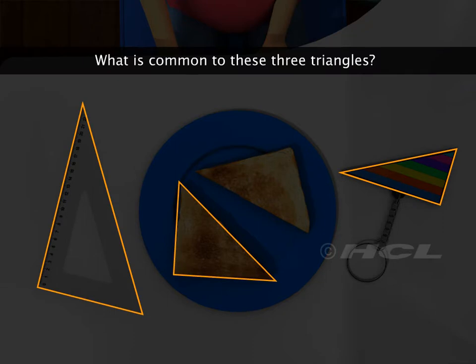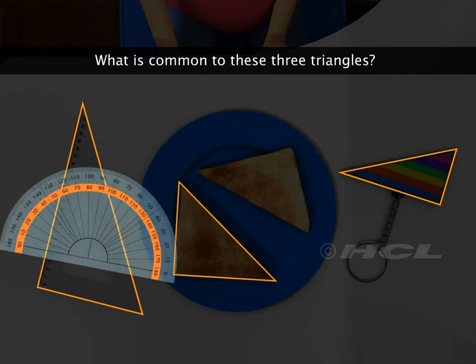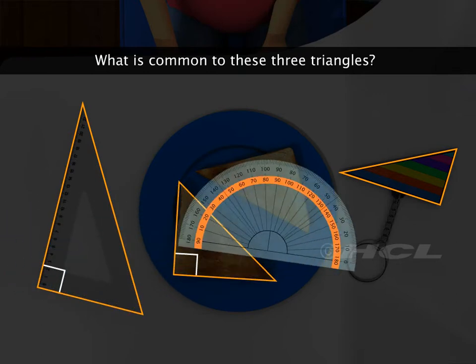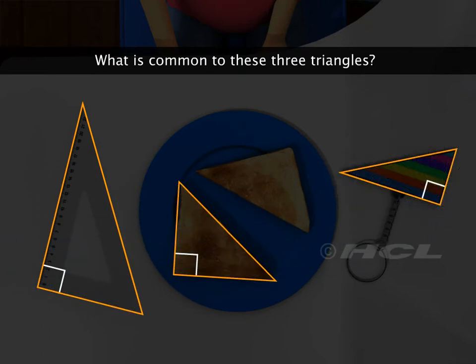What is common to these three triangles? One angle in each triangle measures 90 degrees, so all three triangles are right-angled triangles.